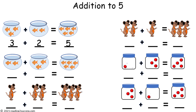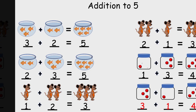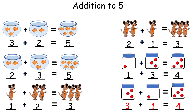In this activity, kids will be adding. They will look at each picture and write the number that it represents to complete each addition equation. The first one has been done: 3 plus 2 equals 5; 2 fish plus 3 fish equals 5 fish. 1 mouse plus 2 mice equals 3 mice. 2 mice plus 1 mouse equals 3 mice. 1 dot plus 3 dots equals 4 dots. 3 dots plus 1 dot equals 4 dots. This is a completed example.